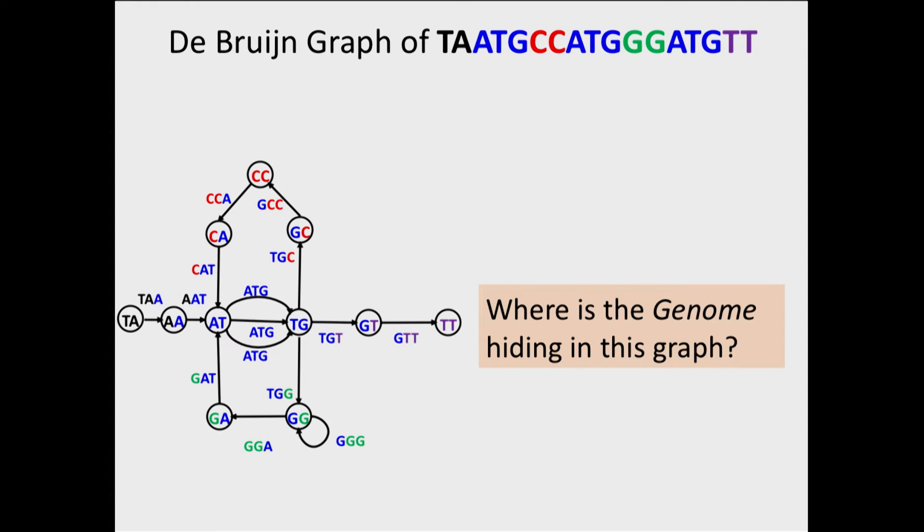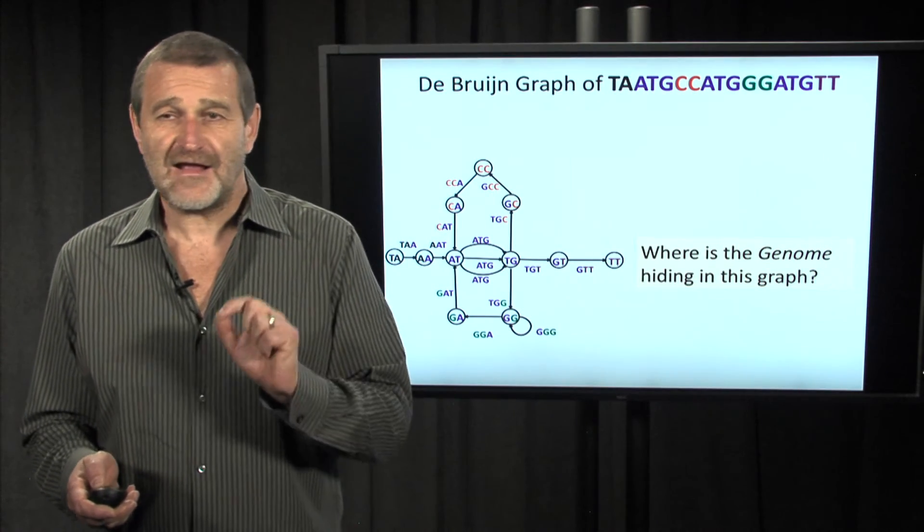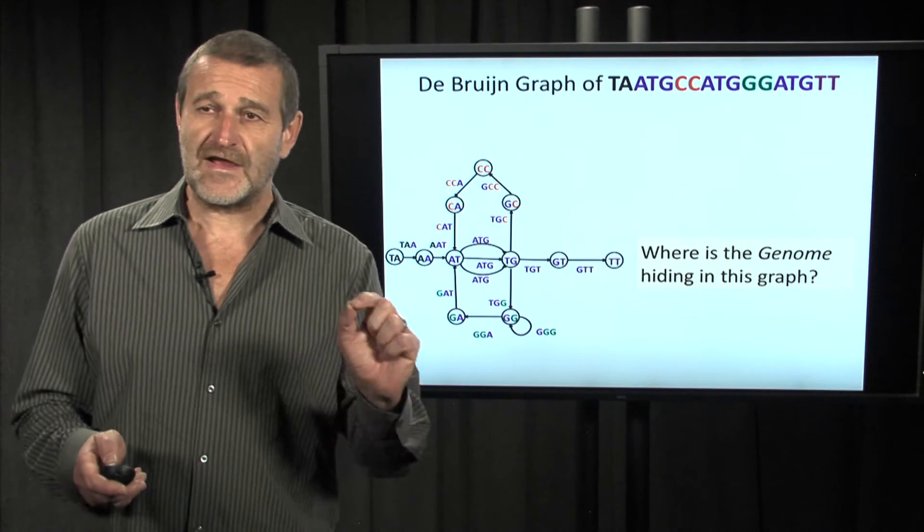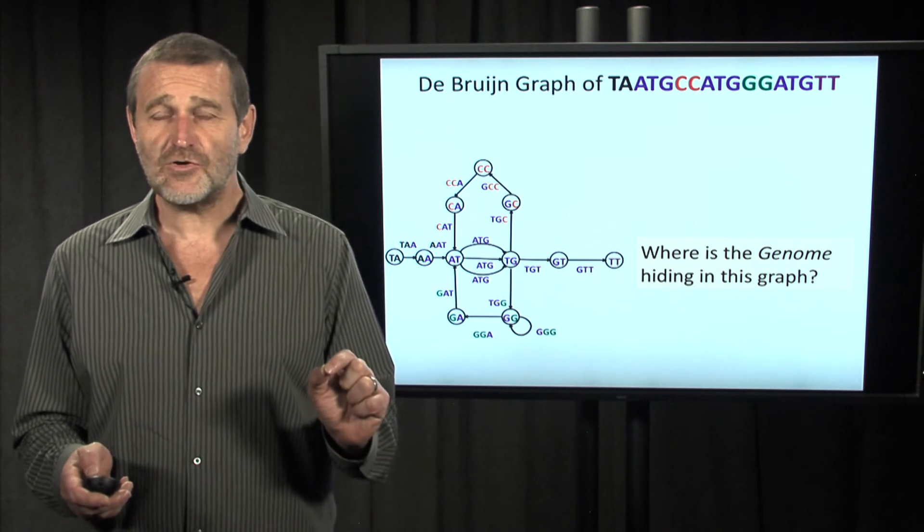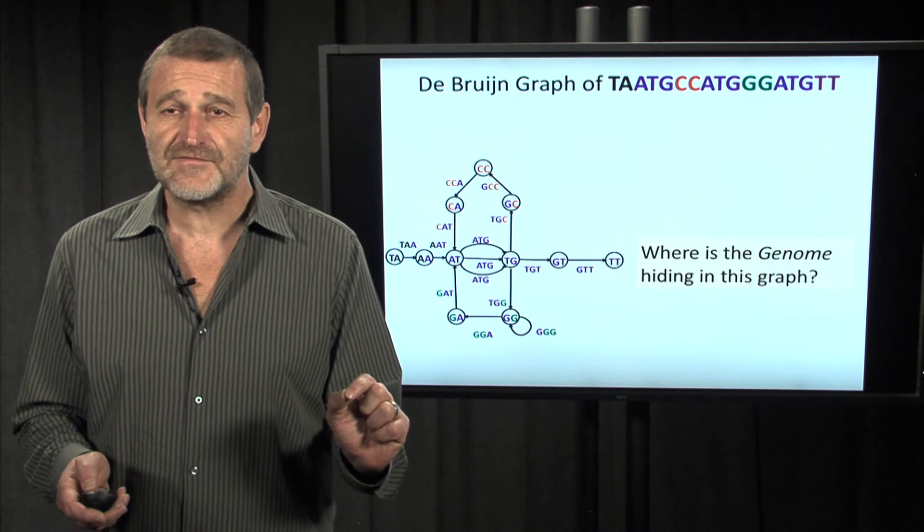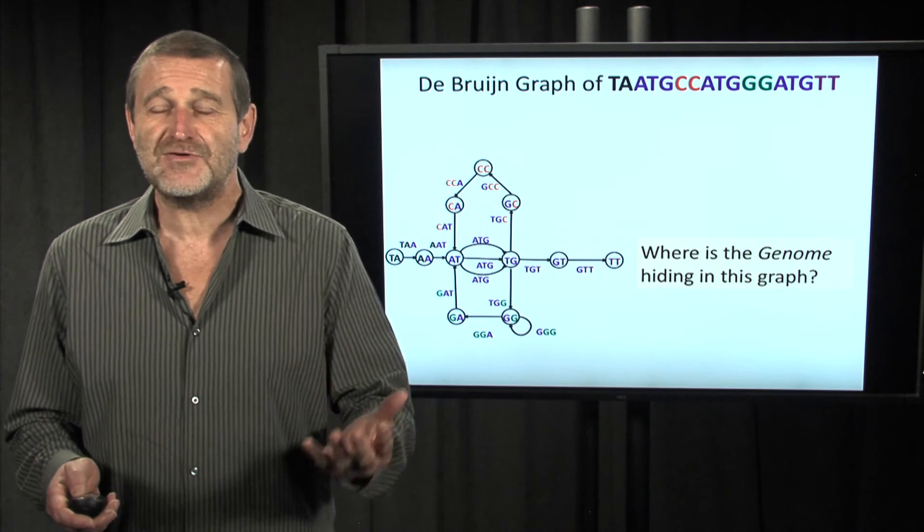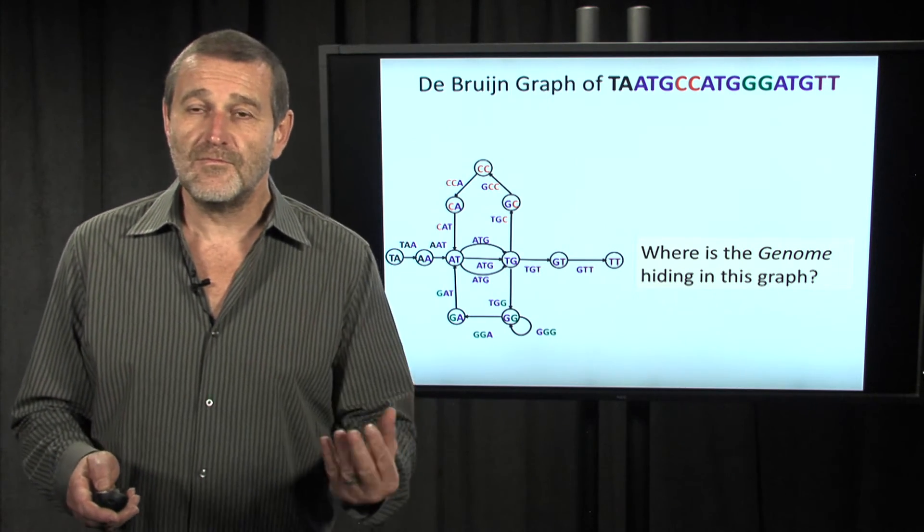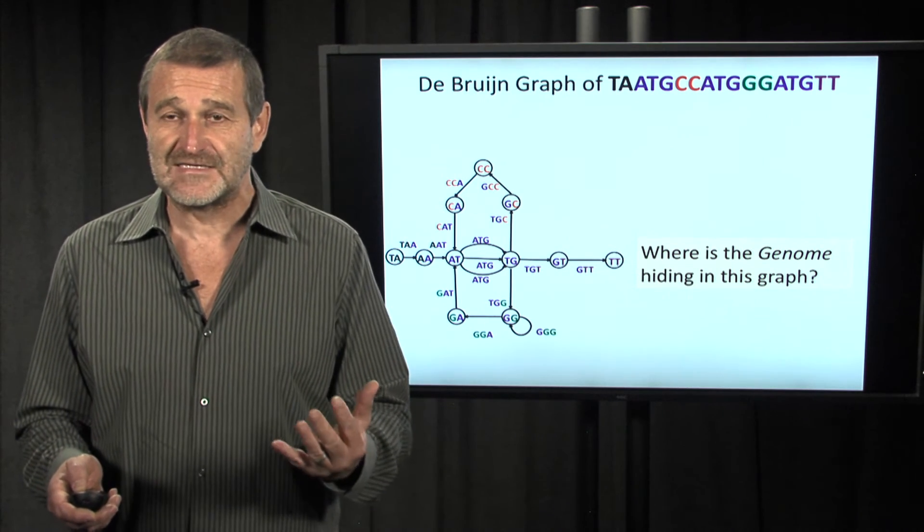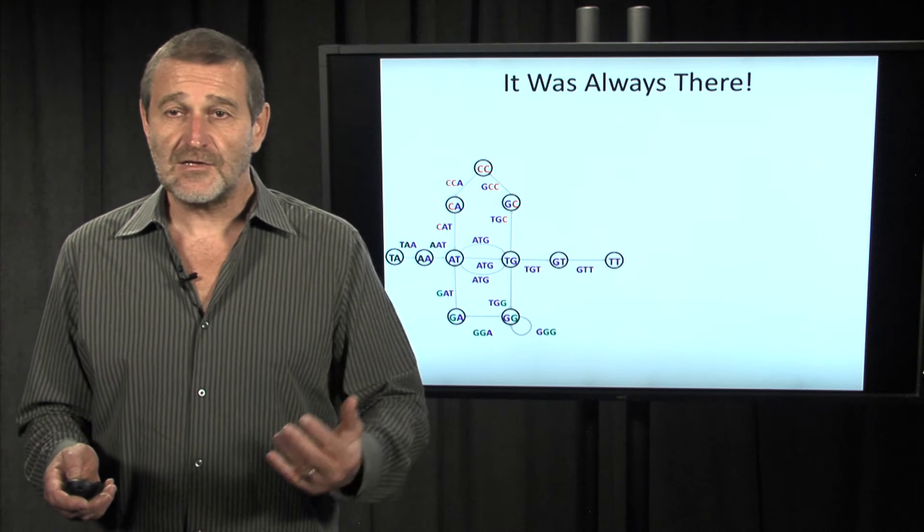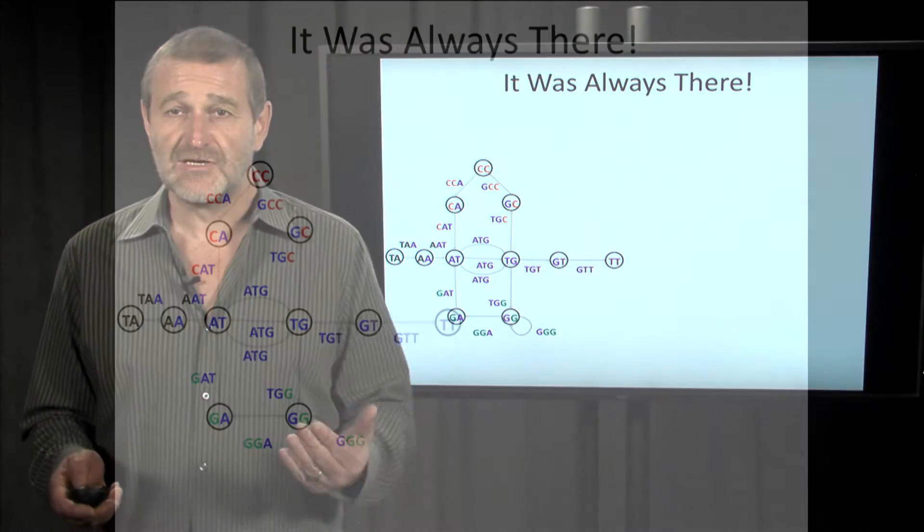And the question that we first should ask: how does this graph help us to find the genome? Where is the genome hiding in this graph? It isn't hiding at all, because we started from the genome to construct this graph. We just made some operations to make the genome somewhat elusive in this graph. But it is there, it was always there.